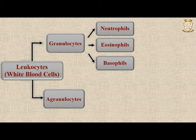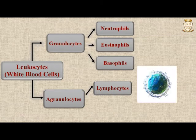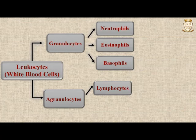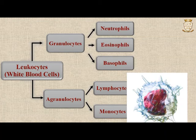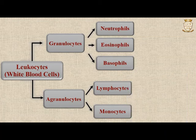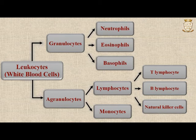The second category of leukocytes is agranulocytes, also known as mononuclear leukocytes. They lack granules in their cytoplasm. There are two types: lymphocytes and monocytes. Monocytes migrate into tissues and transform to form macrophages. Both monocytes and macrophages are phagocytic cells. There are three types of lymphocytes: T lymphocytes, B lymphocytes, and natural killer cells, which are key cells in the immune response.